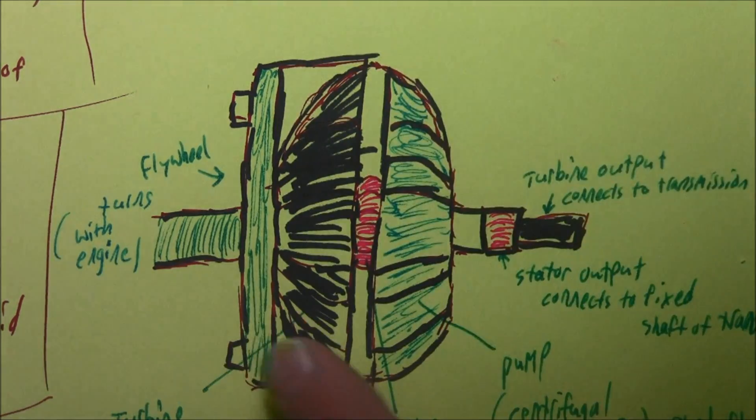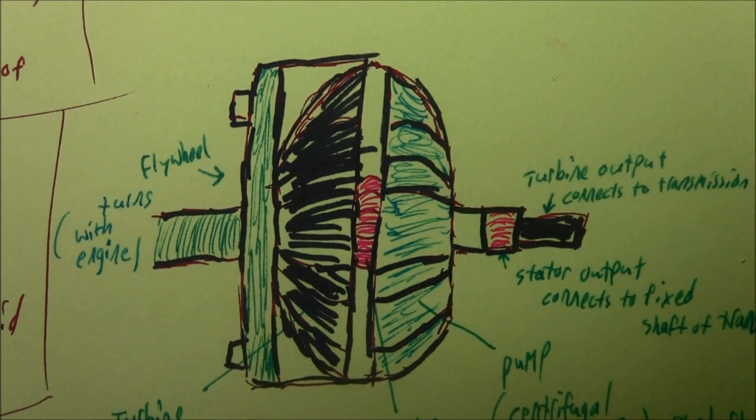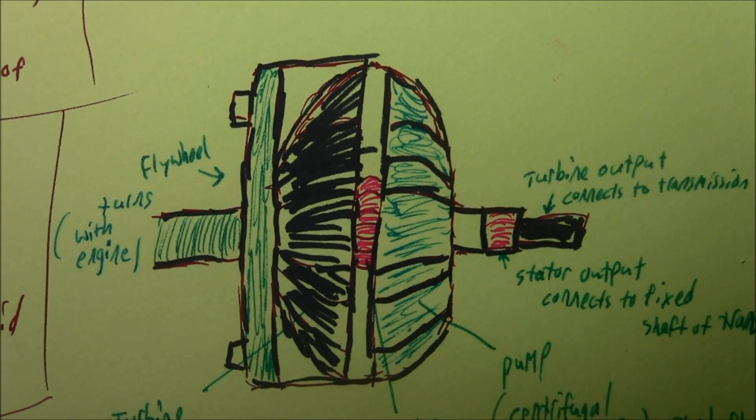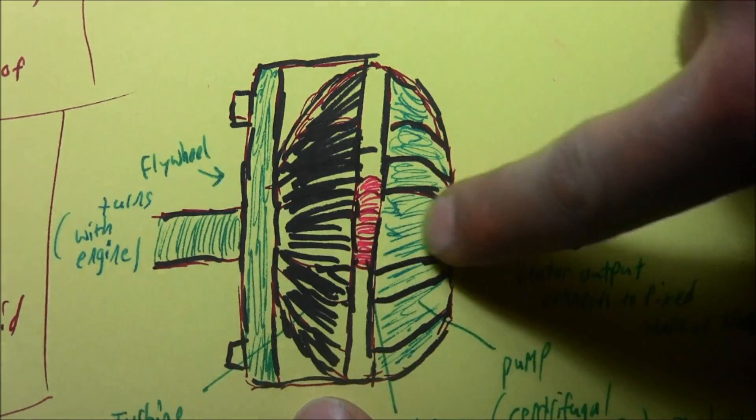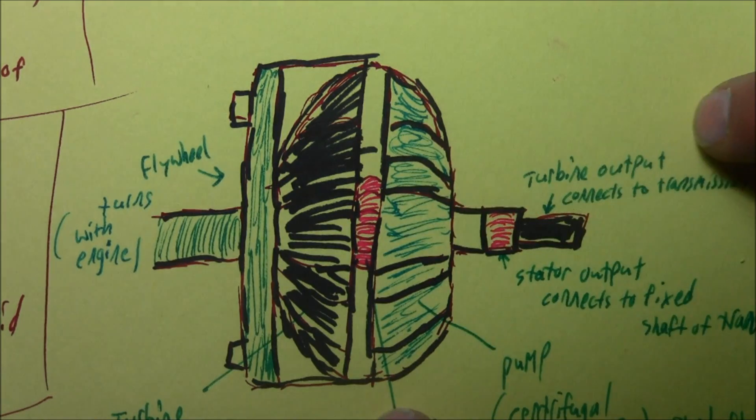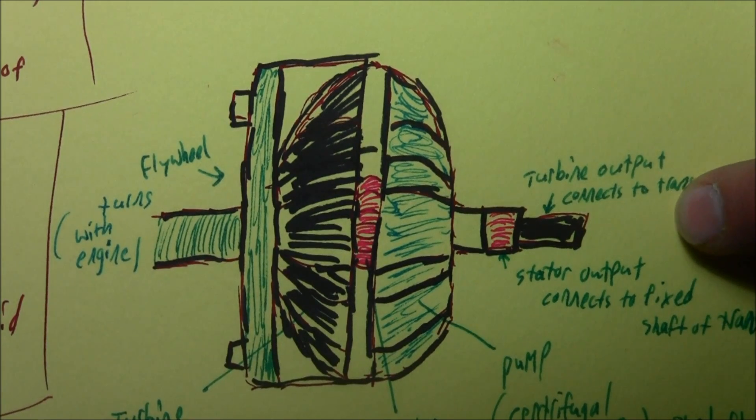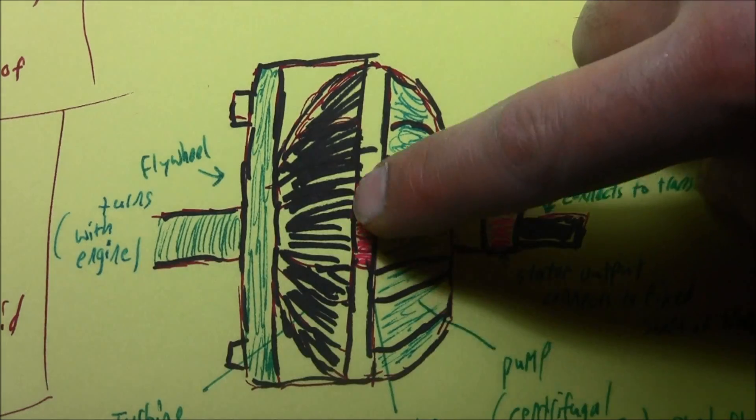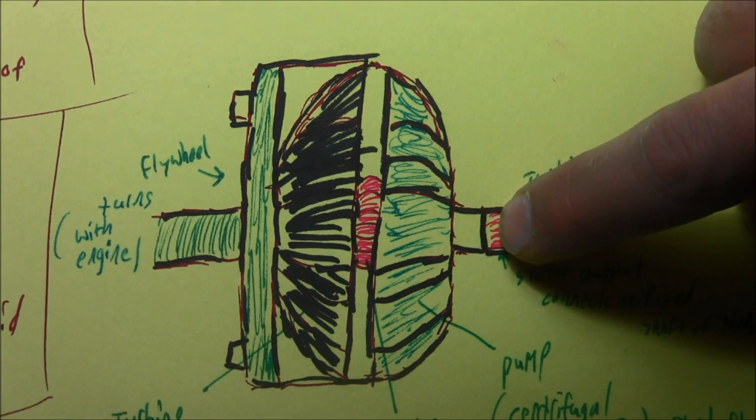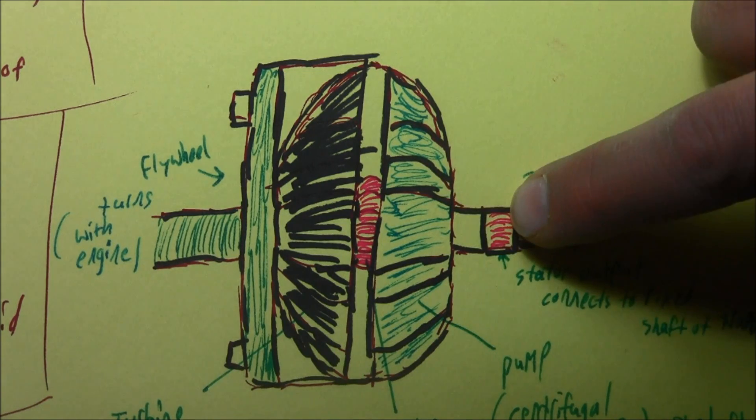It's connected by the shaft inside here. The turbine output connects to the transmission, which moves your wheels eventually. And the stator has an output shaft right here, which is connected to a fixed part, a fixed shaft of the transmission.